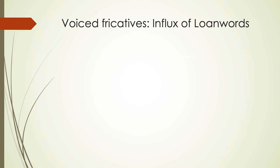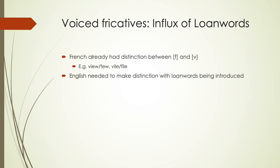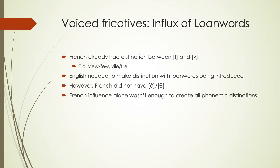One of the big reasons for this change is the influx of loanwords, especially from French. French already had a distinction between /f/ and /v/ — for instance, 'view' versus 'few,' 'vile' versus 'file.' As we borrowed those words in, voiced fricatives started appearing in the same positions as voiceless ones, increasing minimal pairs. We had to adopt the /v/ sound from French. French, however, did not have our dental fricatives — our /θ/ and /ð/ sounds — so French influence alone wasn't enough to create all of these phoneme distinctions.